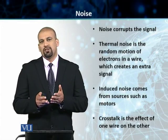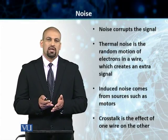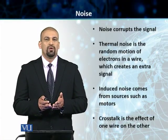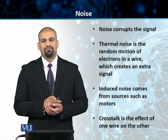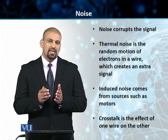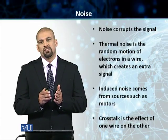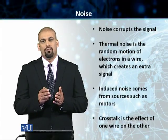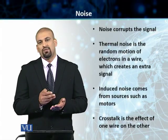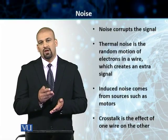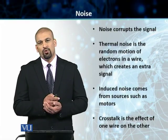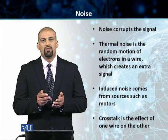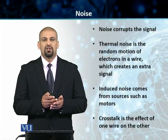Students, transmission impairments are going on. We discussed attenuation. We discussed distortion. Now we are going to be talking about noise. Noise — any kind of noise corrupts our signal. Noise can be of multiple forms. We can have thermal noise, induced noise, crosstalks, and impulse noise. But any type of noise corrupts the original signal.